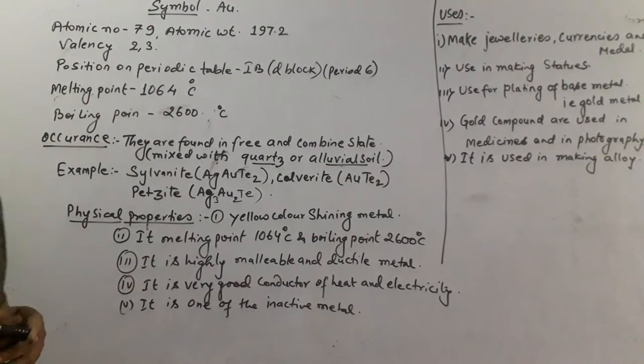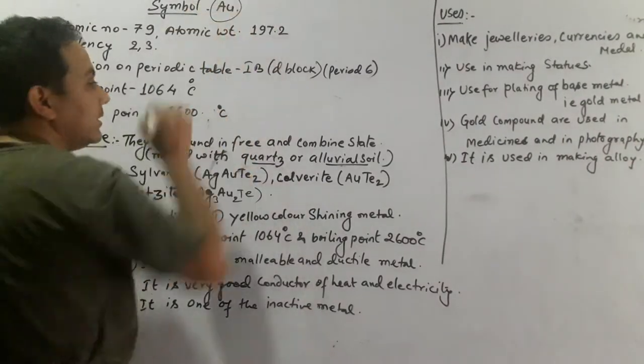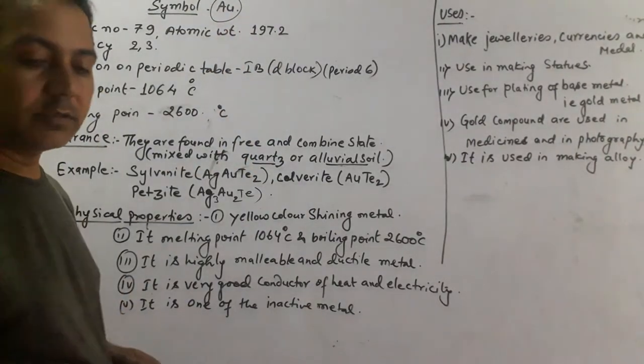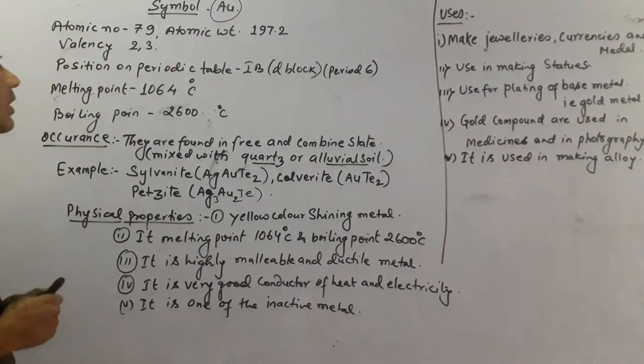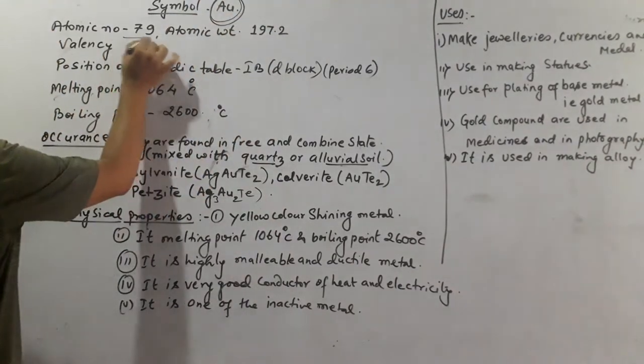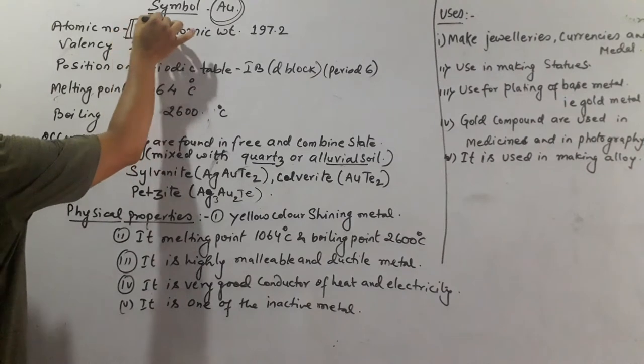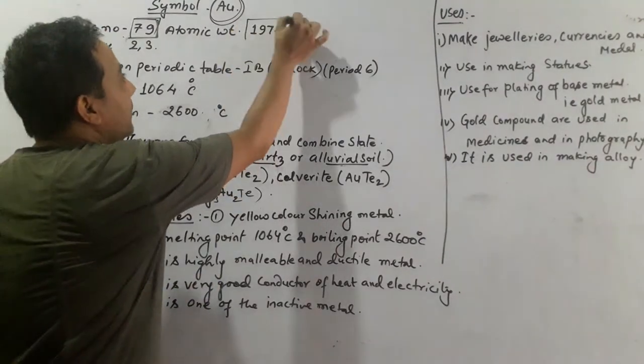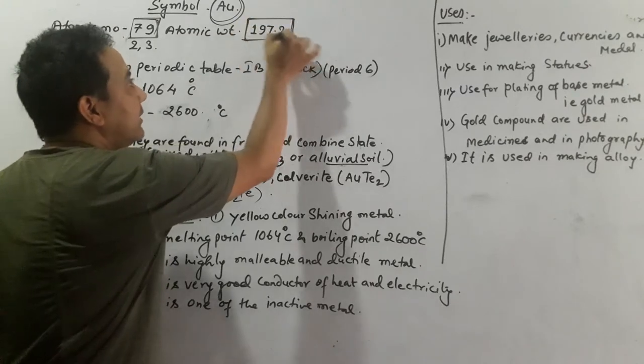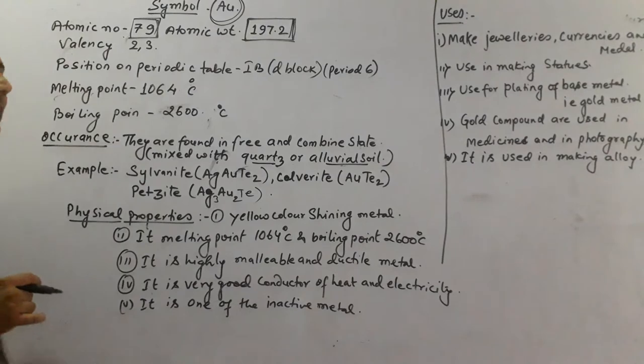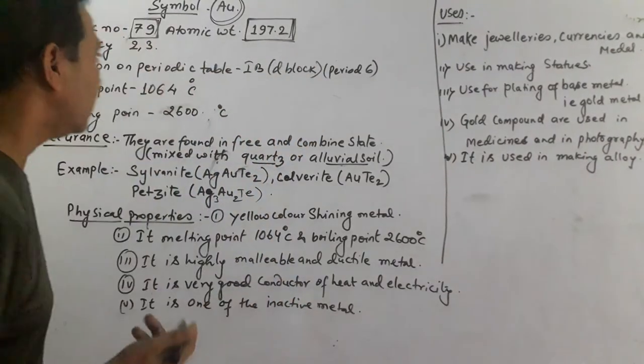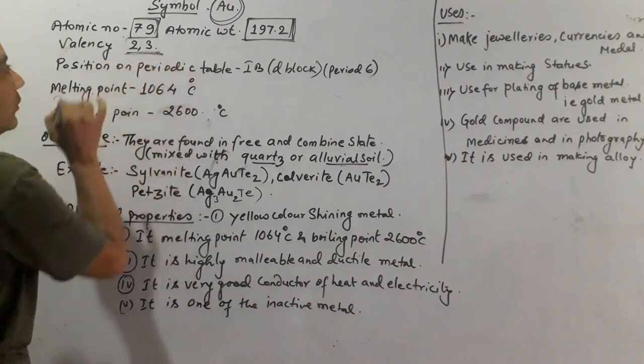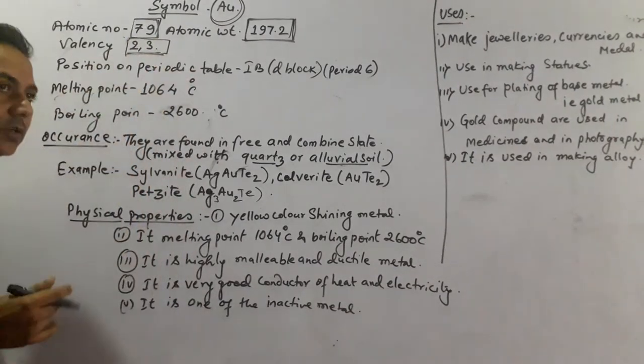What is the symbol of gold? The symbol of gold is Au. It is called Aurum, that is why it is called Au. Its atomic number is 79, and the atomic weight of gold is 197.2. Then it has a variable valency of 2 and 3, so it is called variable valency because it has to balance according to the reactions.